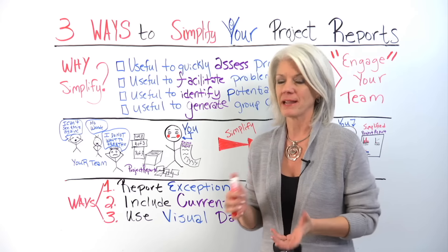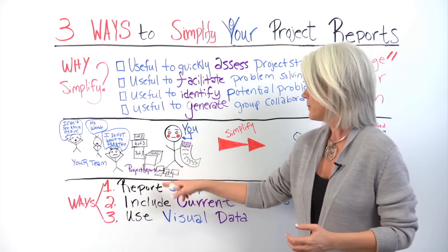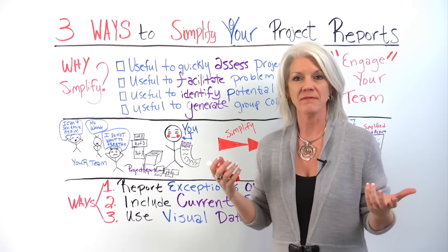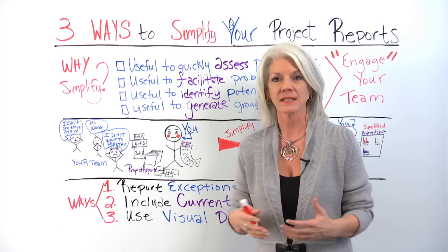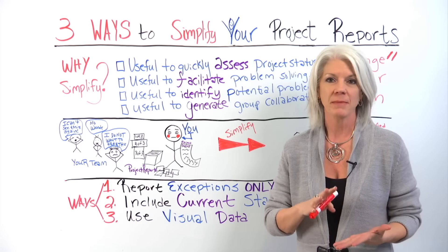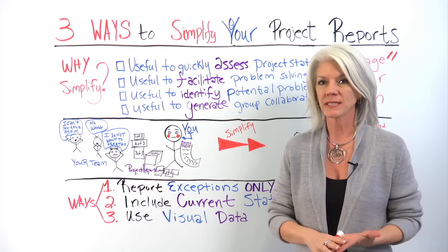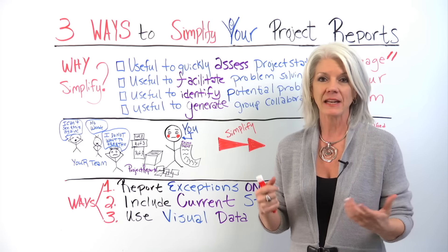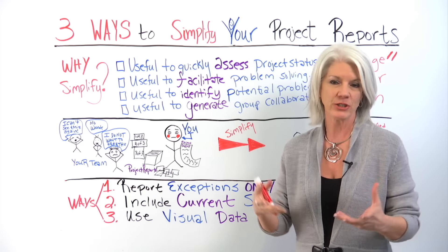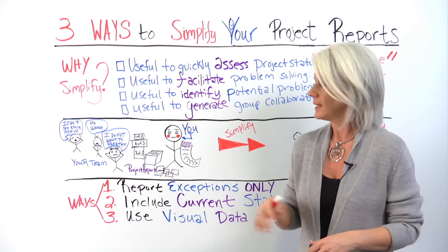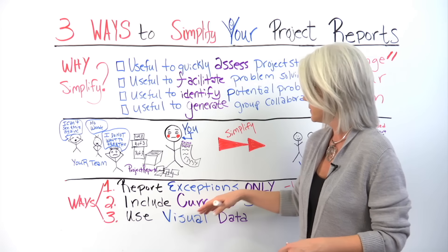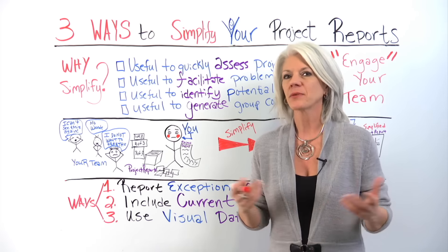Number one: report exceptions only. Exceptions and variances like your cost, your time, your budget, maybe resources or even quality — and report on any issues or potential risk.